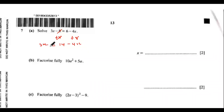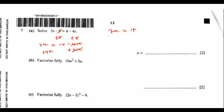The second part is that I want 4x to leave the right-hand side. So I need to add the additive inverse — plus 4x on both sides. This cancels the minus 4x, and 3x add 4x gives us 7x. So we have 7x equals to 14. Finally, let's divide both sides by 7. So 7 cancels 7, and x equals to 2, since 7 goes into 14 twice.